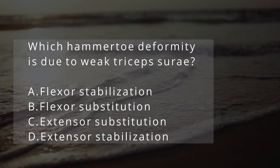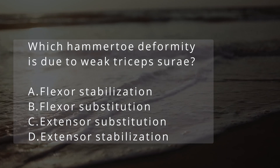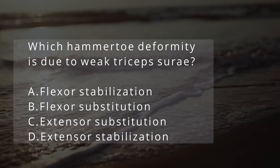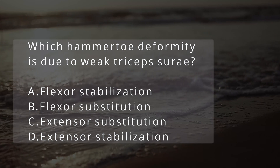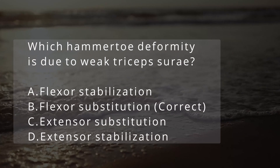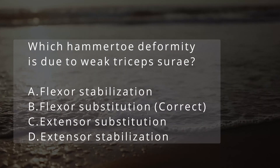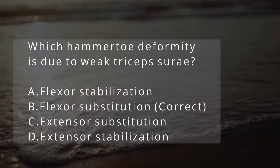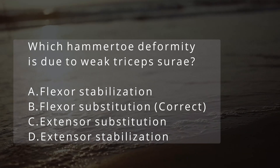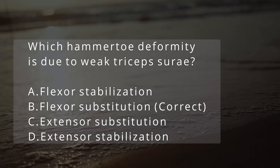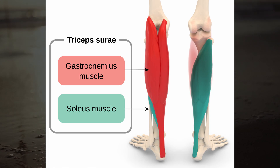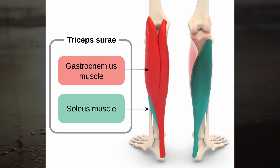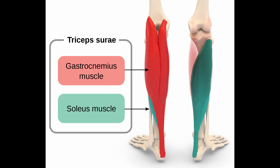Which of the following hammer toe deformity is due to a weak triceps surae? The answer is flexor substitution. Remember that a weak triceps surae causes the deep posterior compartments to fire earlier and longer, leading to the hammer toe deformity.